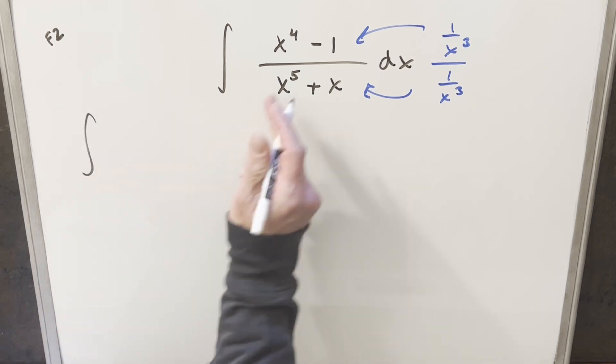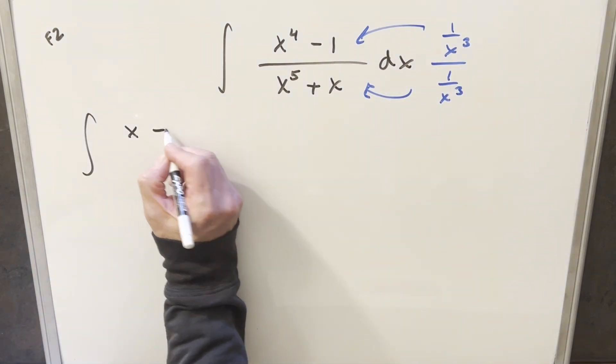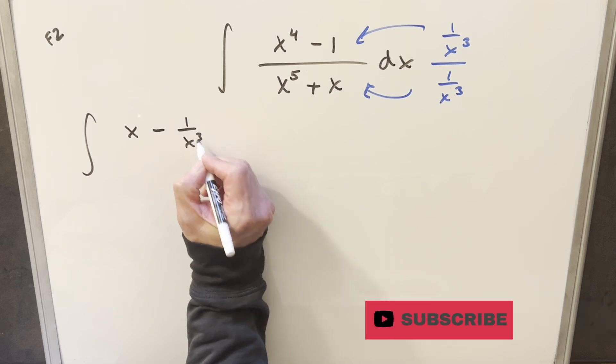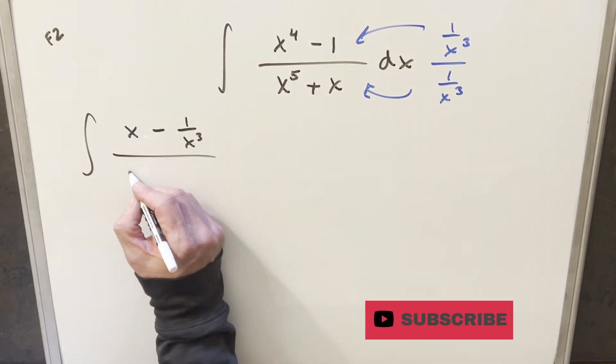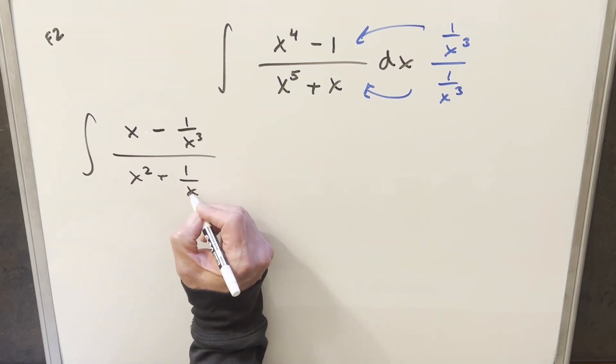So when I do this, the numerator is going to become one over x cubed times x to the fourth gives me just an x here. And then we're going to have minus one over x cubed here. Then the denominator one over x cubed times x to the fifth, we end up with an x squared. And then here, this is going to become one over x squared.